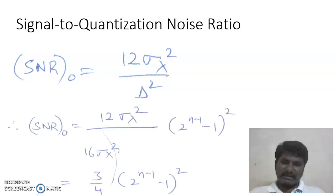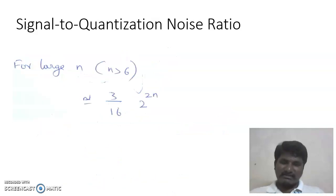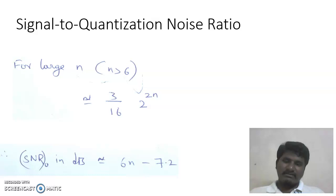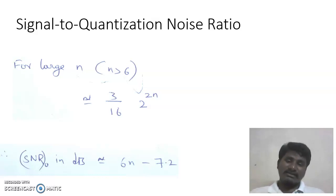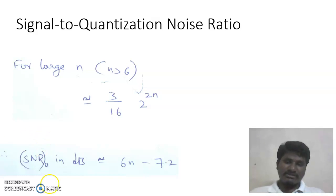Substituting x_max = 4σ_x into the expression for delta, and then substituting delta into the SQNR expression, we obtain a closed-form formula. For larger values of n (greater than 6), ignoring the minus-one term, the linear SQNR simplifies, and converting to decibels gives: SQNR (dB) = 6n − 7.2 dB. Here n is the number of bits used to represent each quantization level. For every additional bit, the SQNR increases by 6 dB — more bits means less quantization error.